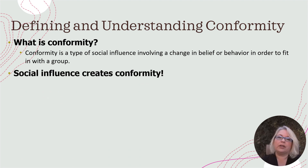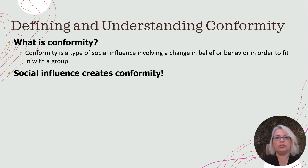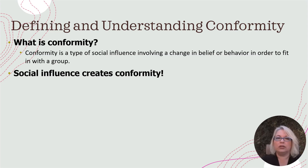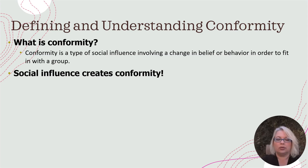Social influence creates conformity. And in a lot of ways, it's positive and good. Imagine if we didn't know how to behave in certain settings — how awkward and uncomfortable it would be and how misunderstandings could occur. Like waiting in line at a fast food restaurant: if you didn't know to wait in line and walked right to the front, you could create a lot of problems for yourself. So conformity can be a good thing — it teaches us societal norms.